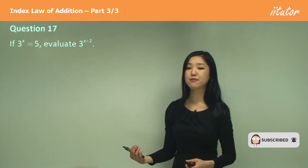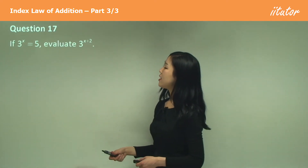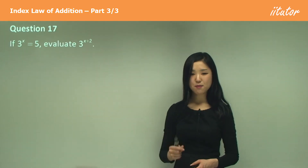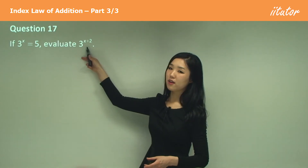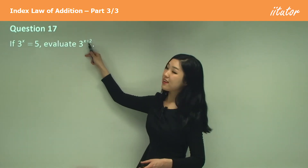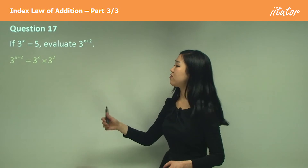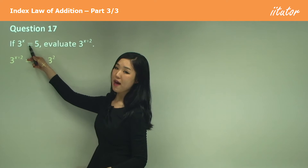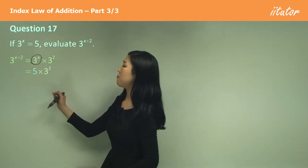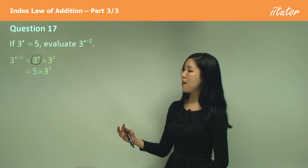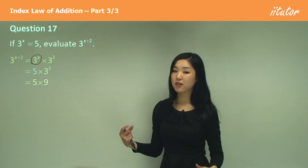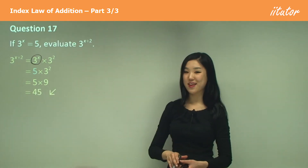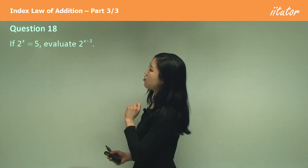We want to evaluate 3 to the power of x plus 2. Think about how we can separate this — again, we're adding the indices because we must have been multiplying. You can see the given property: 3 to the power of x is 5, so that part becomes 5. Then 5 times 3 squared — 3 squared is 9 — so 5 times 9 is 45. That's the answer.